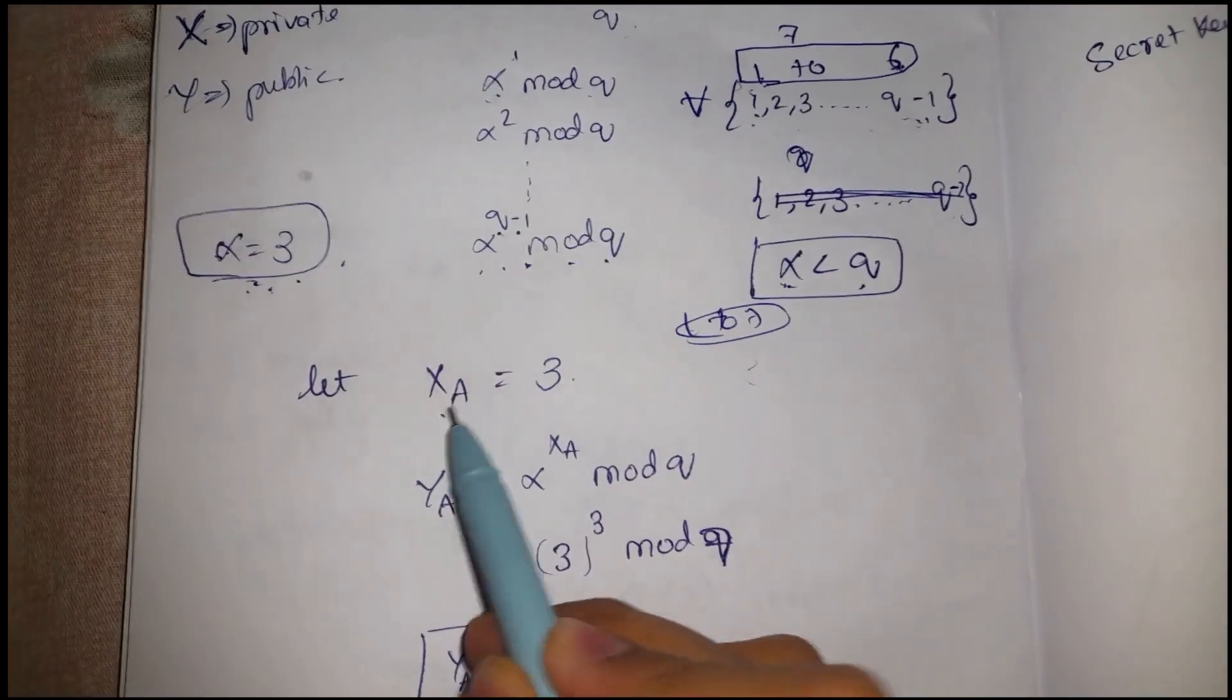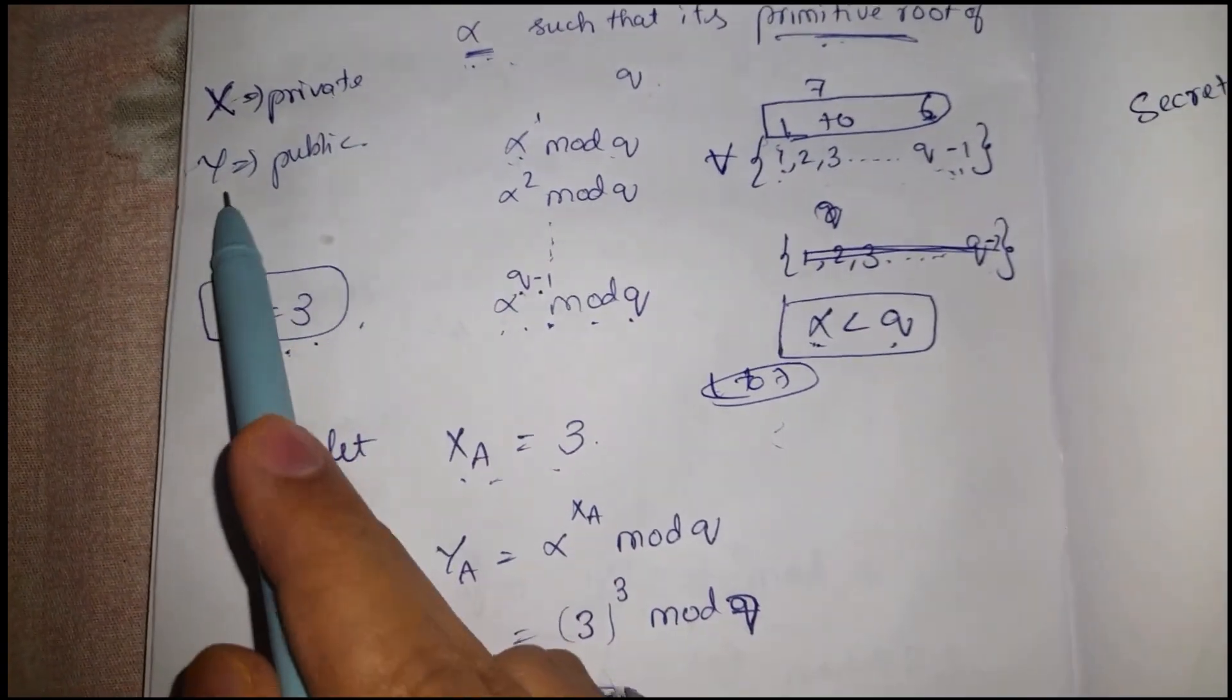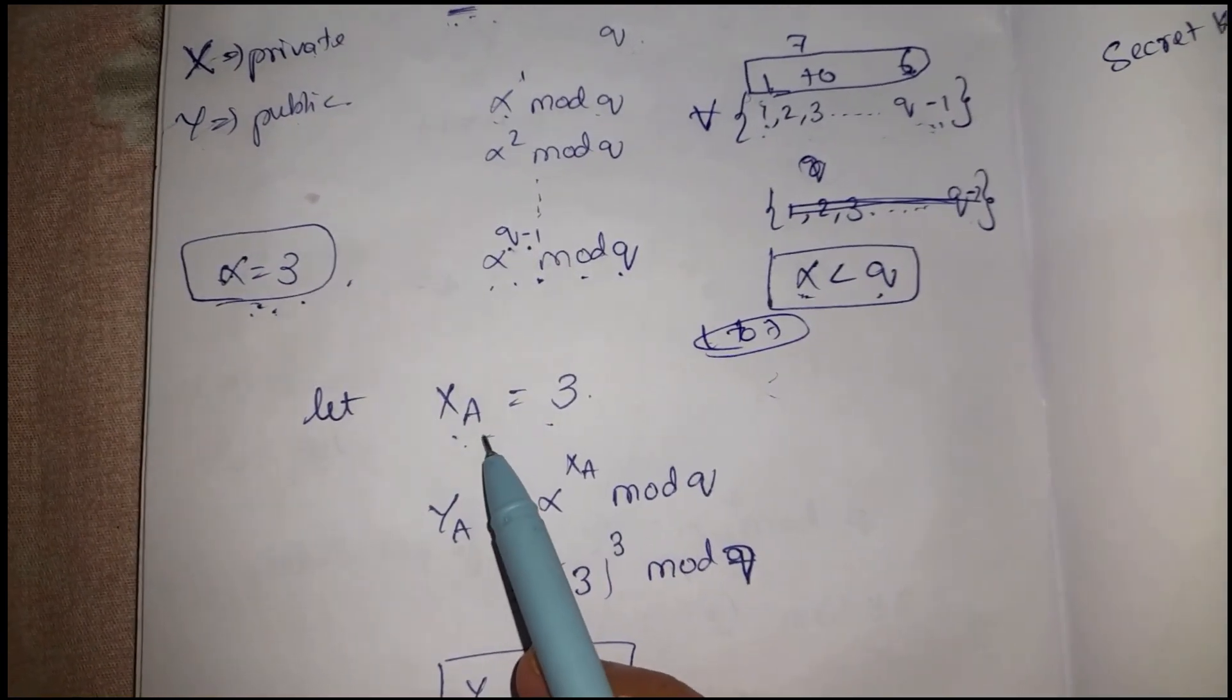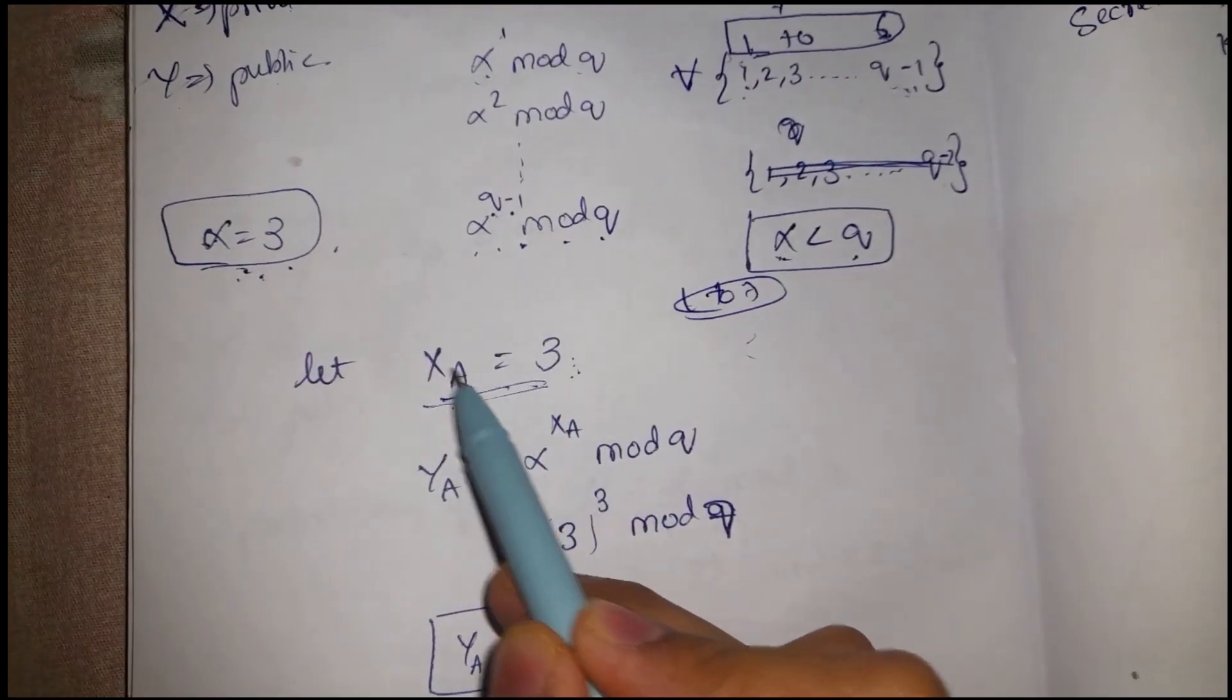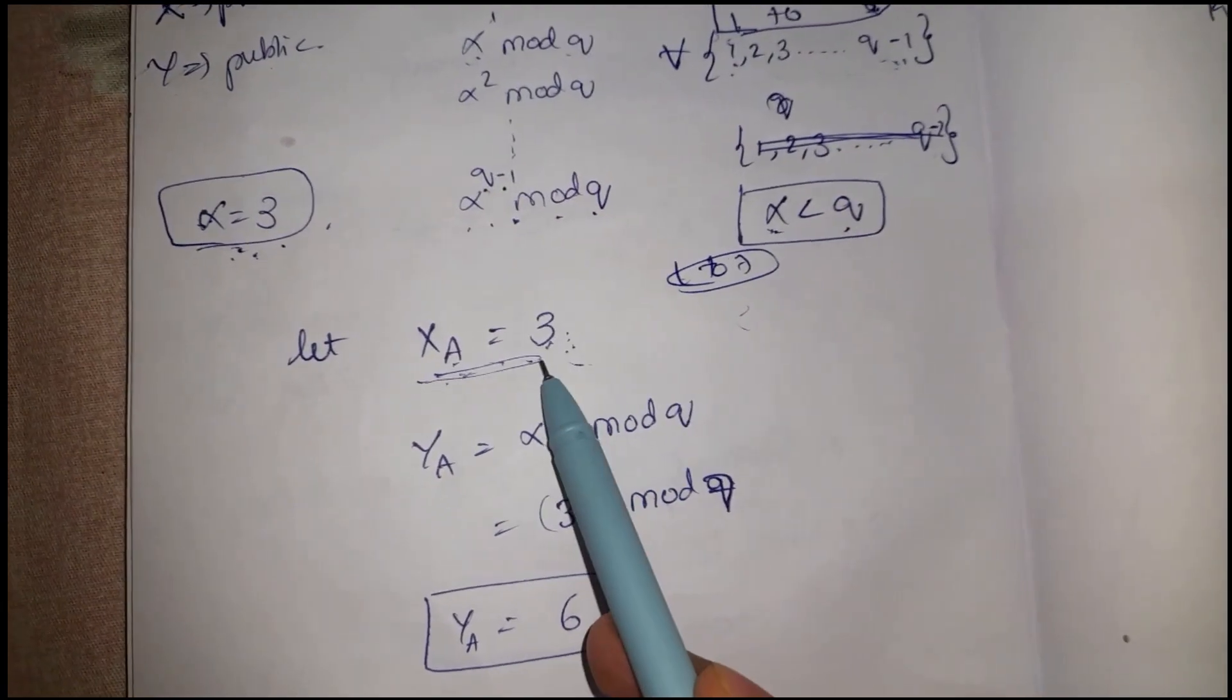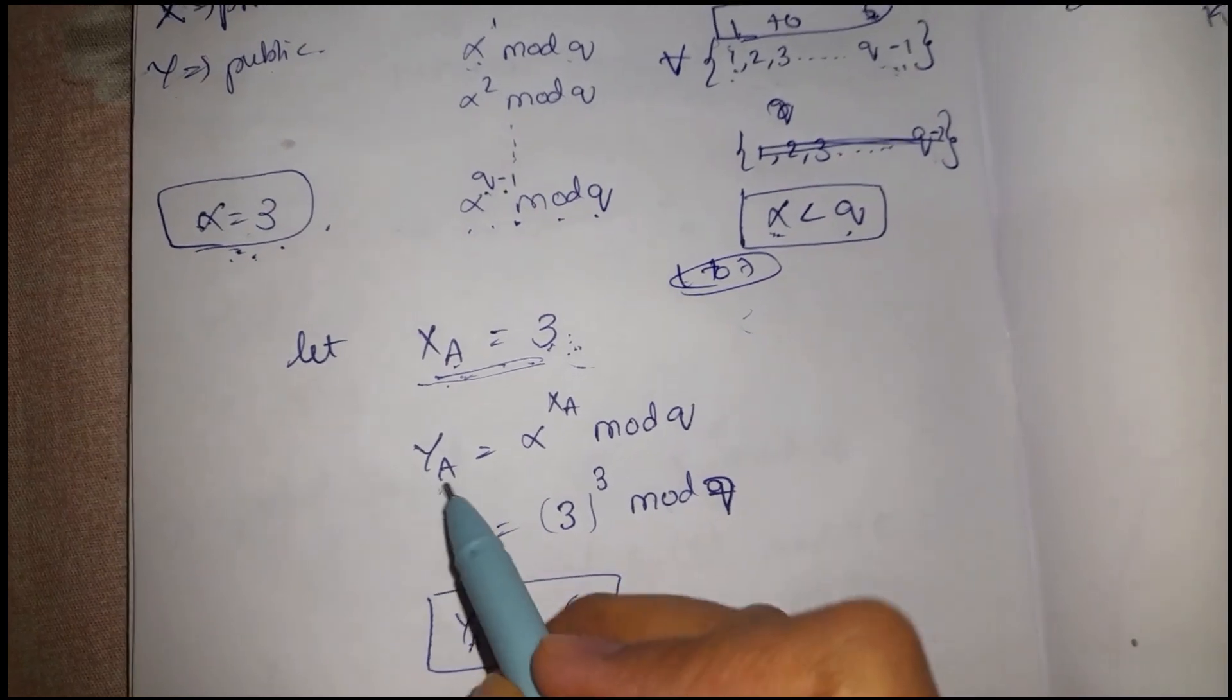Coming to the next step, we are taking XA here. X represents the private keys and Y represents the public keys. We are assuming A has taken a private key of 3, XA private key for A as 3.